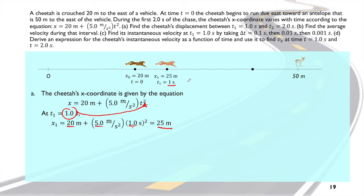Therefore the distance at one second is 25 meters already as the cheetah moved forward to the antelope. The next one is time two seconds. All you have to do is again substitute it here, and then you will have this answer. Therefore at time two seconds, the cheetah is already 40 meters from zero. Okay, now that means it didn't reach the antelope yet.